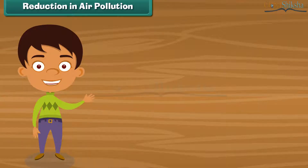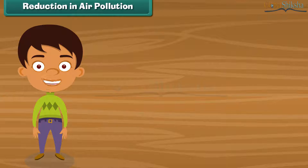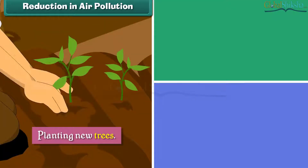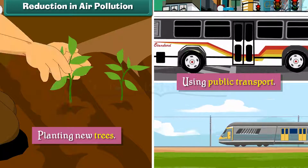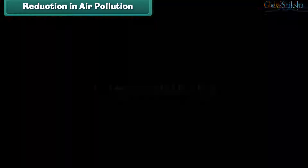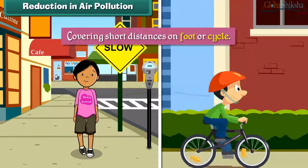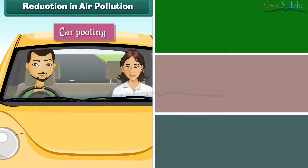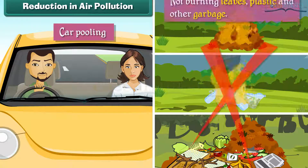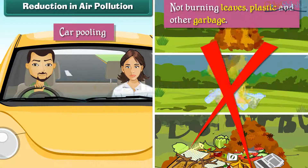Reduction in air pollution: It is our responsibility to reduce air pollution. We can do so by planting new trees, using public transport, covering short distances on foot or by cycle, carpooling, and not burning leaves, plastic, and other garbage.